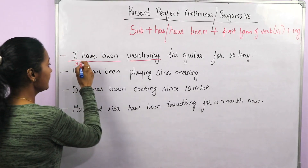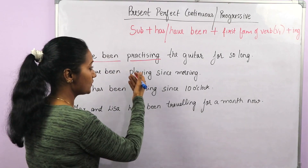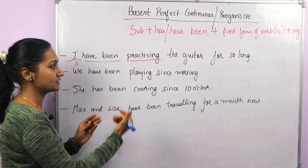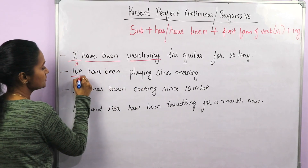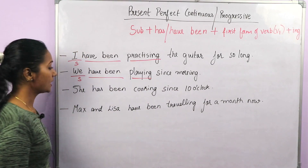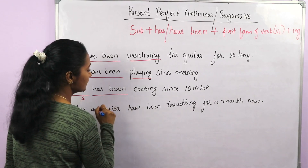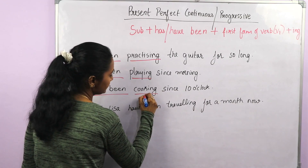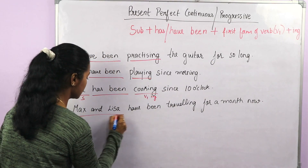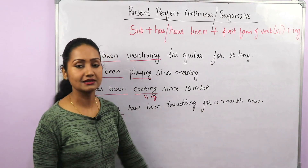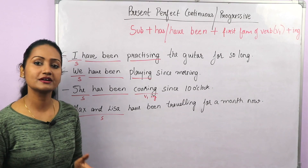Let's go through some examples. 'I have been practicing the guitar for so long.' Here 'I' is the subject, 'have been' is the verb, and 'practicing' is the main verb — first form plus '-ing'. Next: 'We have been playing since morning.' Then: 'She has been cooking since 10 o'clock.' And: 'Max and Lisa have been traveling for a month now.' This is how we construct sentences in present perfect continuous tense.